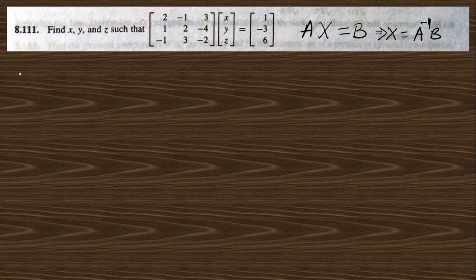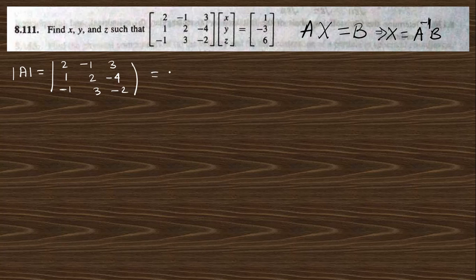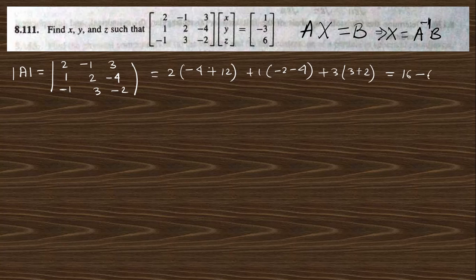We know A⁻¹ = adjoint(A) / det(A), so first we find det(A). The matrix A has entries 2, -1, 1; 2, -4; -1, 3, -2. Expanding the determinant gives 2(-4+2) + 1(-2-4) + 3(3+2), which simplifies to give det(A) = 16 - 6 + 15 = 25.